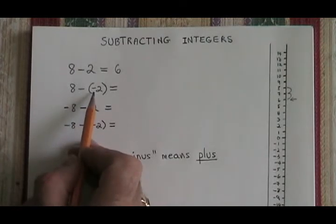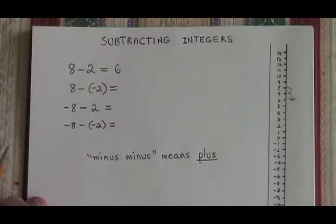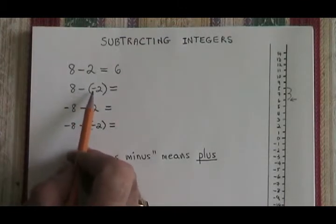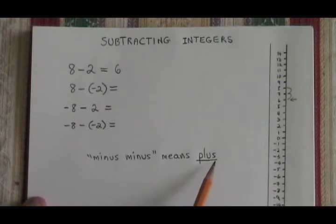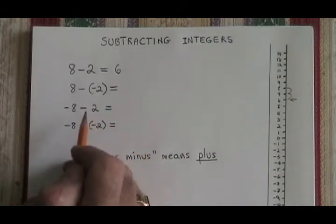8 minus negative 2 gives us a new thing we have to deal with. Minus negative. What does it mean? You can read this as 8 minus minus 2. When you see minus minus, it means plus. Really, the two negative signs cancel into a plus sign.